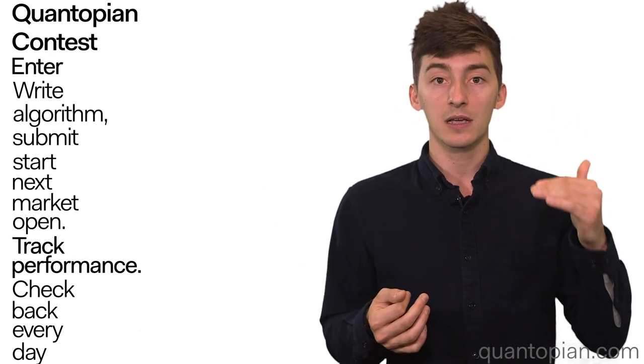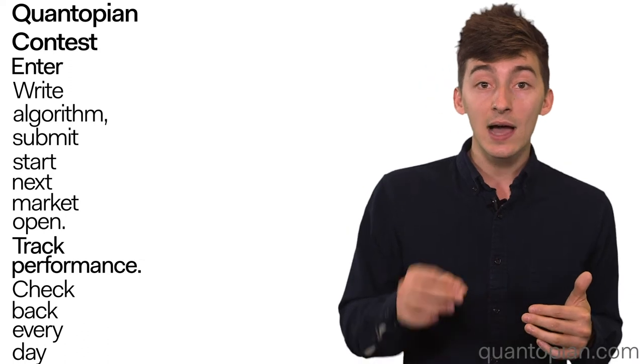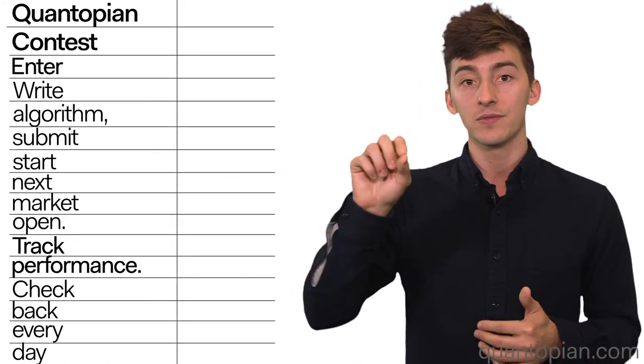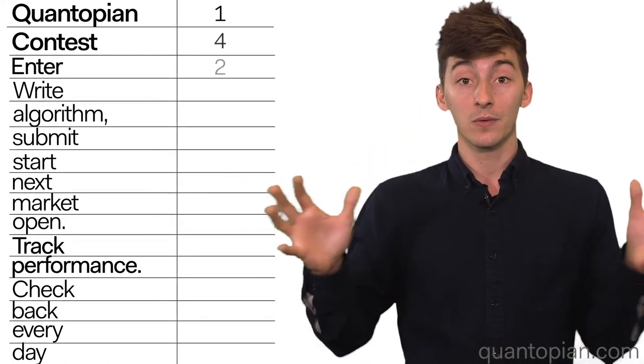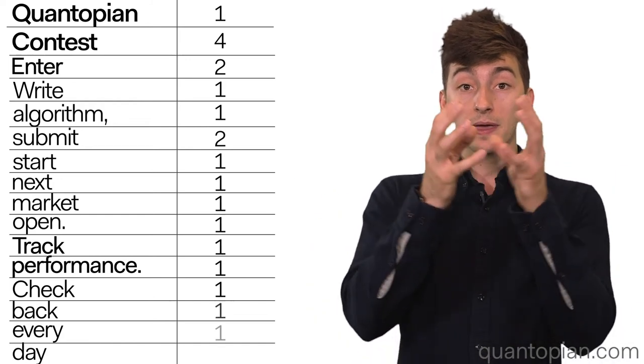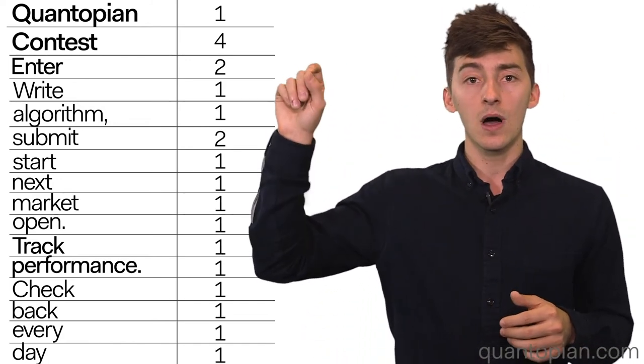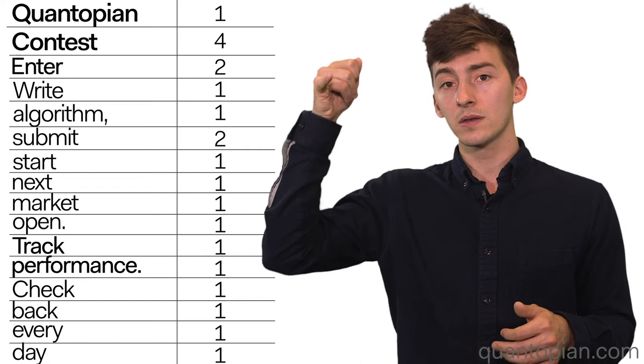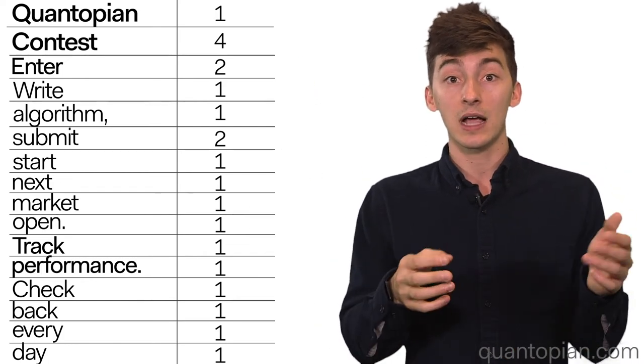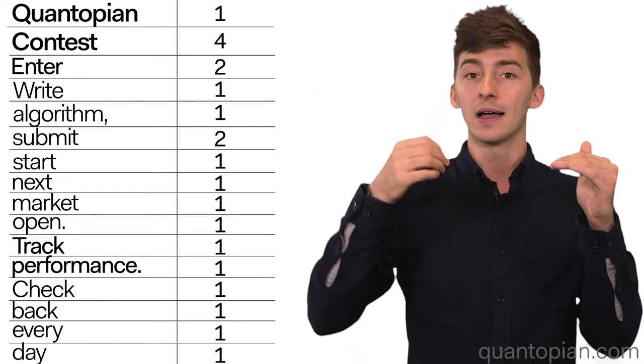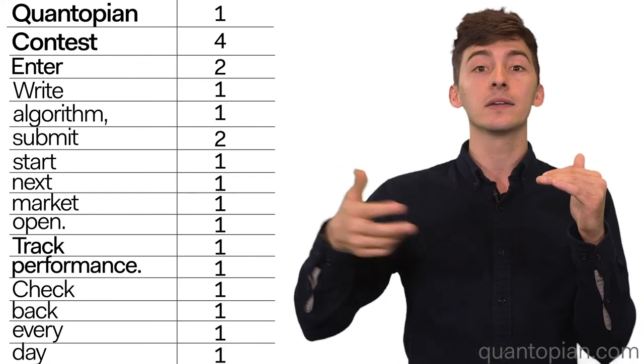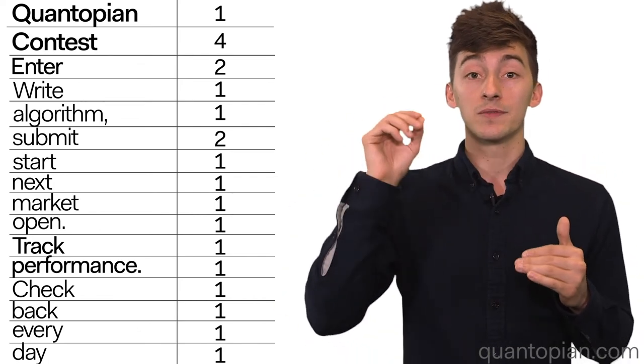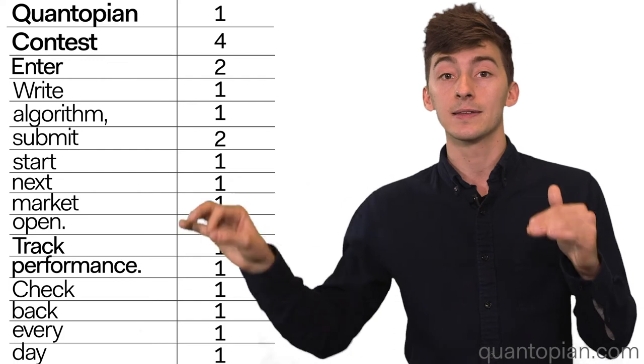For every document in the corpus, we count every instance of every individual word in it. We end up with a big matrix where every column is a token and every observation is a document, with zeros or higher integers for the number of times a given word appears in that document.